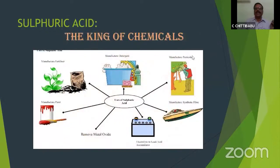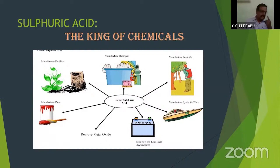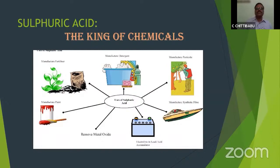The next example is sulfuric acid — the king of chemicals. This is a question I frequently ask students coming for admissions: if a 10th class student cannot answer what the king of chemicals is, he doesn't know anything about chemistry. One author writes that the economic strength of a country can be measured by the amount of sulfuric acid consumed in that financial year — that is how involved sulfuric acid is in various fields of society.